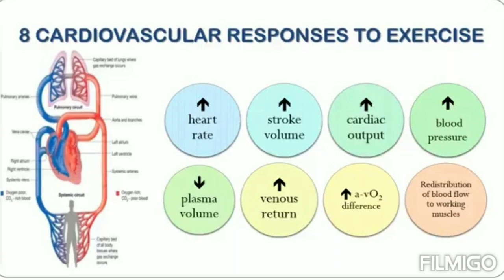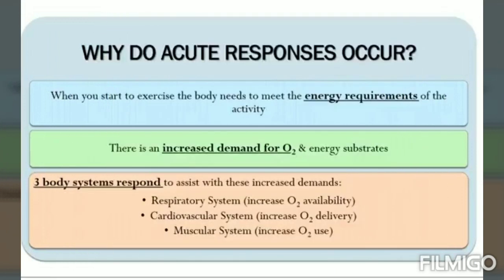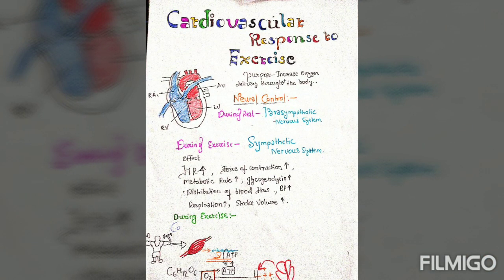When we are in the resting phase, our heart rate is lower. In order to increase the cardiac output and fulfill the demand of oxygen required, our heart rate, respiratory rate — all increase under the influence of the sympathetic nervous system.